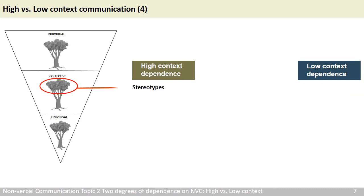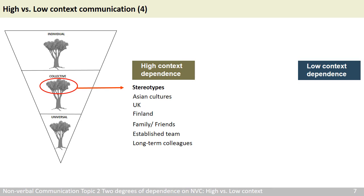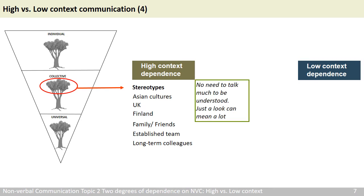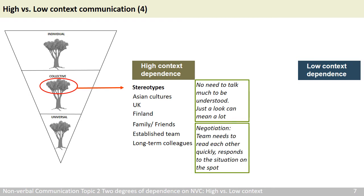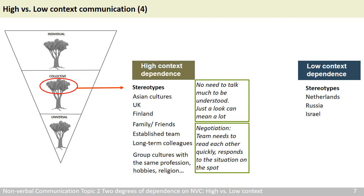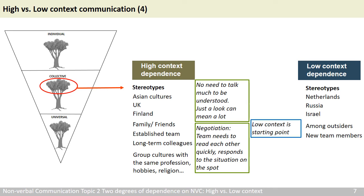Using stereotypes, high-context cultures tend to be Asian cultures, the UK, and Finland. Group cultures — such as friends, families, those on the same team — can become very high-context with one another. People don't need to talk much to be understood, because just a look can mean a lot. This is important in negotiation, where a team needs to read each other quickly and respond to the situation on the spot. Other group cultures, such as those with the same profession, hobbies, or religion, can also share a high-context communication style. On the other side, the Dutch are known for their directness; Russians and Israelis can be quite blunt as well. Among outsiders and new team members, low-context is probably the starting point. The smoothness of high-context does take a lot of time, trust, and understanding to build.